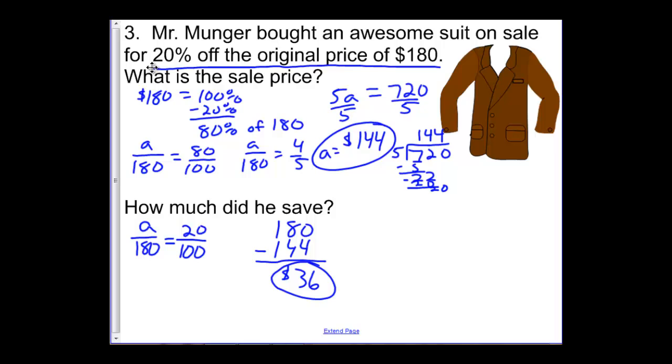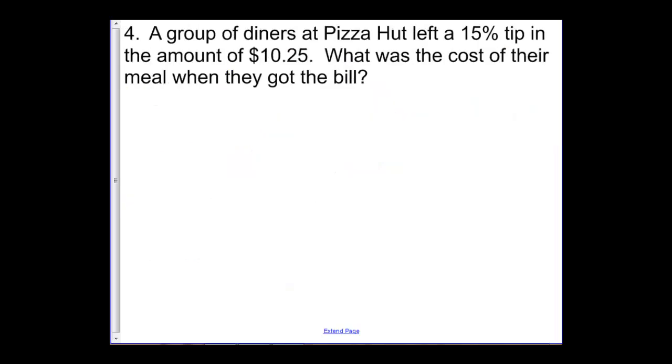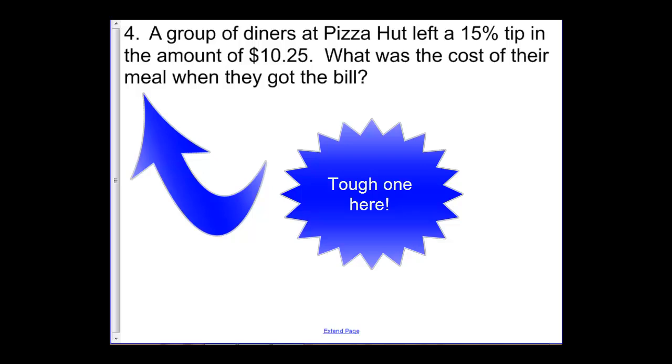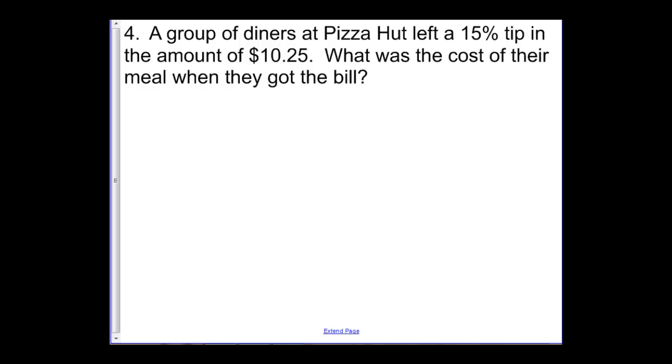One last more difficult example maybe of how we might apply the percent proportion in a word problem situation. It says a group of diners at Pizza Hut left a 15% tip in the amount of $10.25. What was the cost of their meal when they got the bill? So notice this is a little trickier than the one we did earlier. It tells you that they left the 15% tip, and it actually tells you that the 15% tip was $10.25. That's what the tip was. What the question asks is what's the cost of their total meal? What's the cost of their meal when they got the bill? A percent proportion is going to be handy here, but you've got to be careful about what you set up. Obviously, 15% tip, that gives you the percent out of 100. The question now is, is $10.25 the total number, is $10.25 the part? And if it was a tip, if it was a 15% tip, that number is going to actually go on top, and it would be $10.25 over this bottom number that we don't know yet. 15 out of 100 equals $10.25 out of what, setting up that proportion?